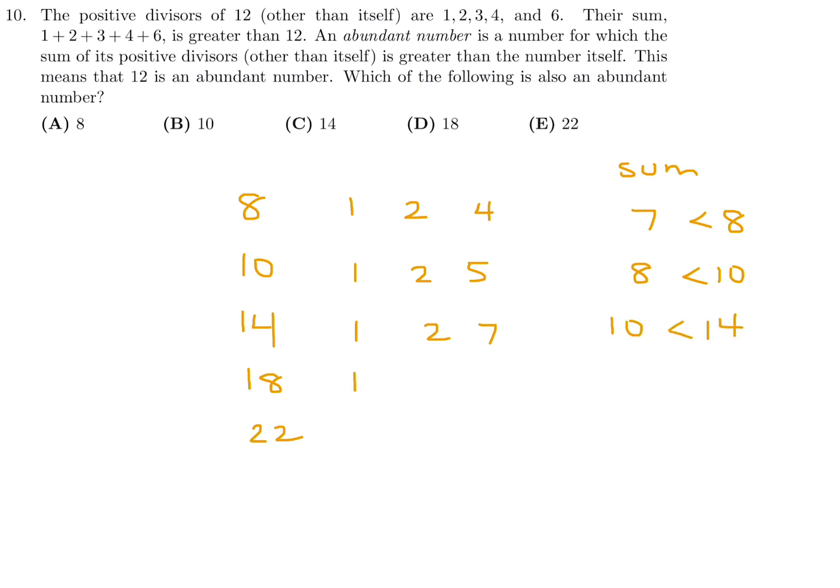18. The divisors are 1, 2, 3, 6, 9. The sum is 21. 21 is greater than 18. So that means 18 is the abundant number of the list of answer choices. Number 10, the answer is D.